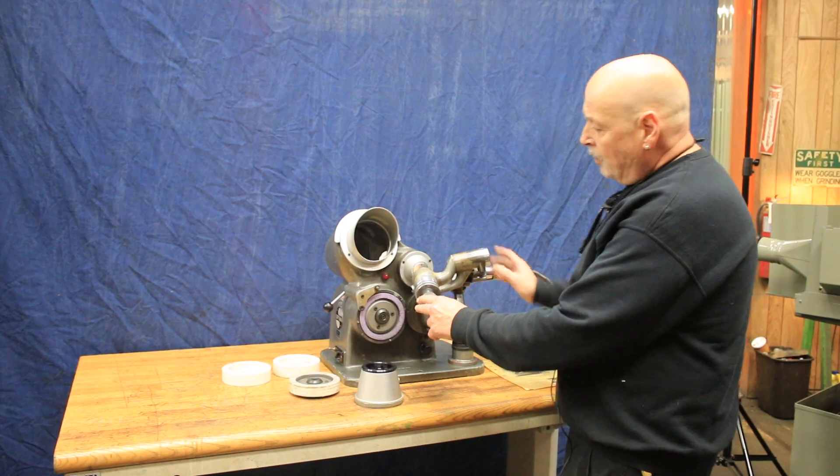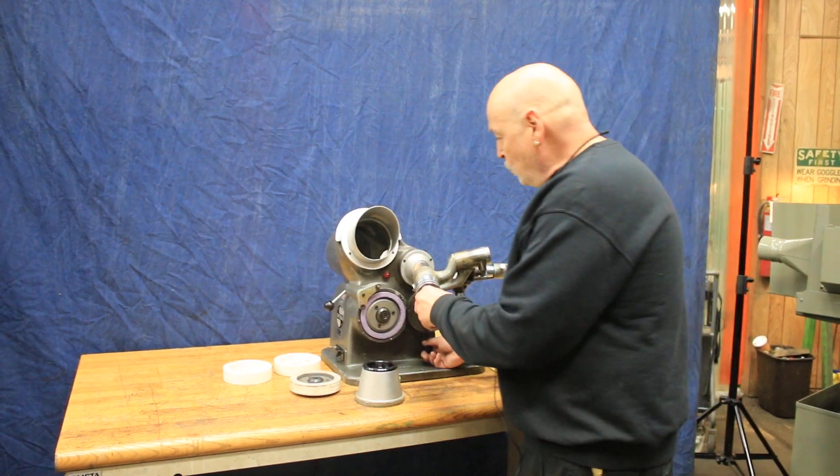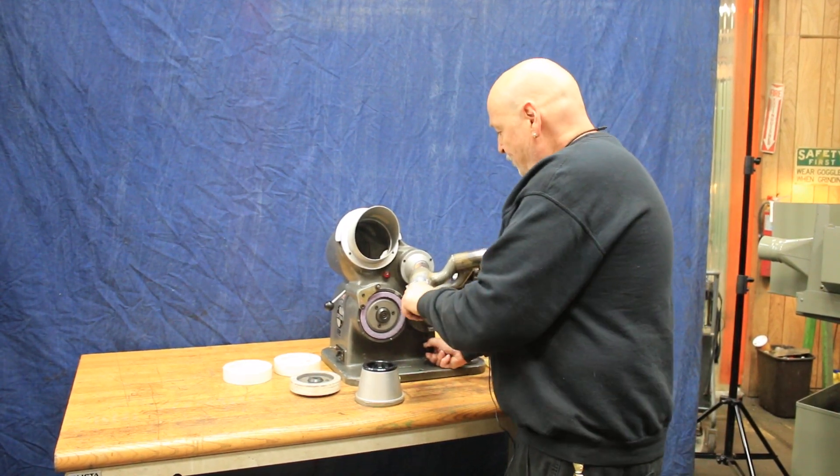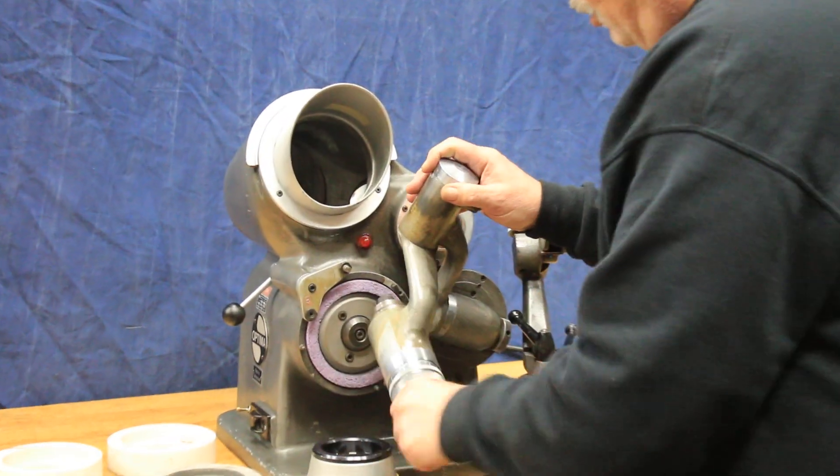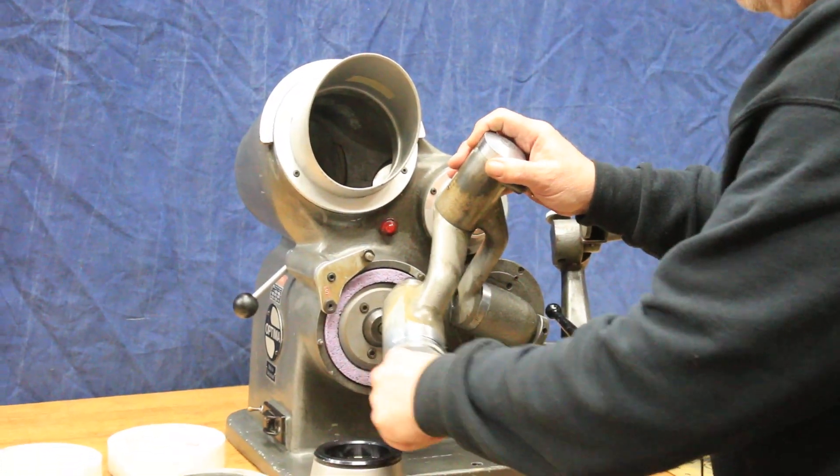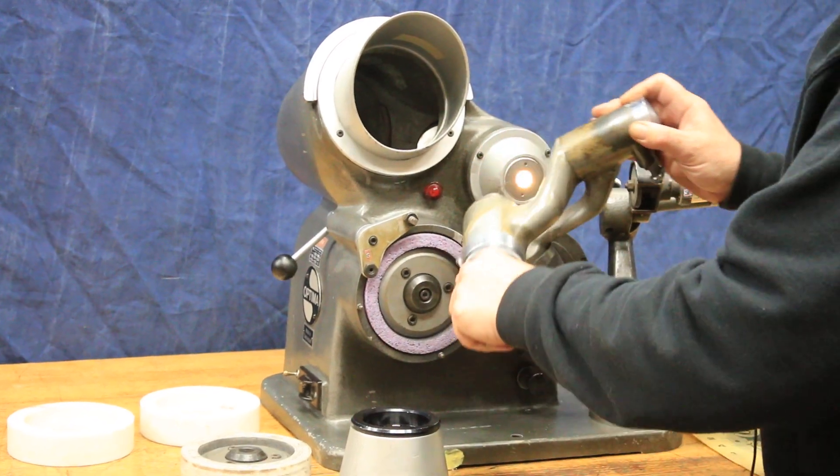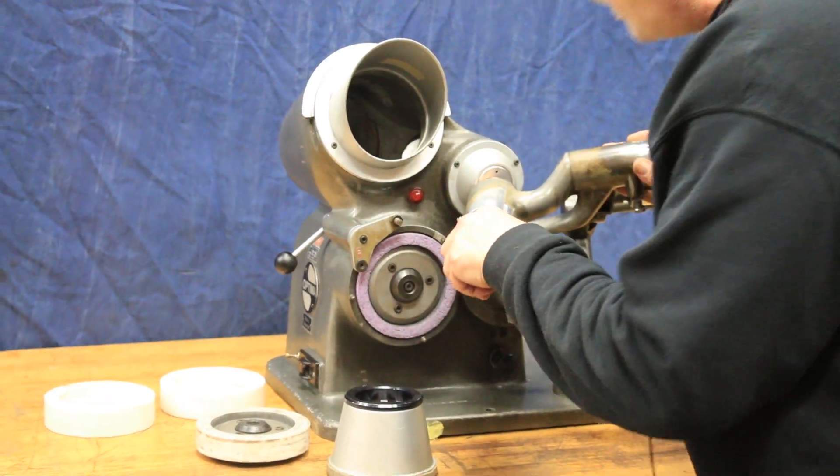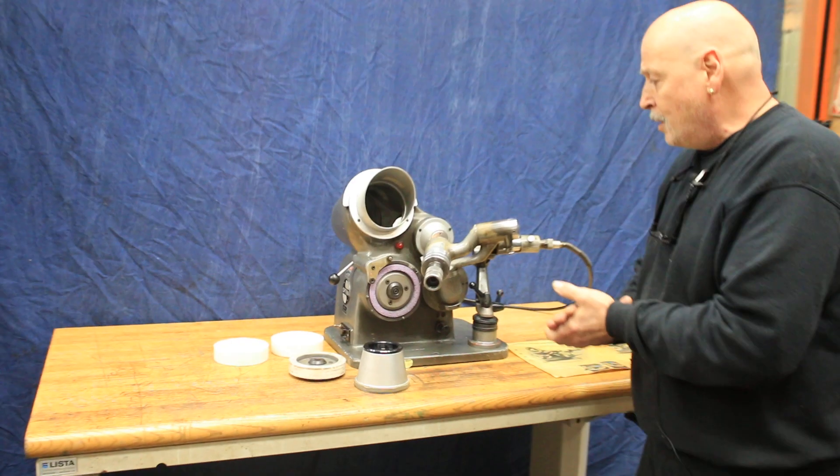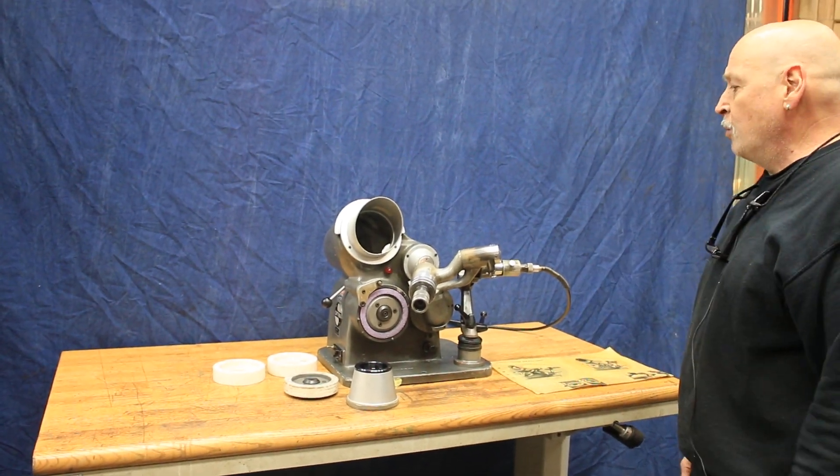Same with the arm here. The idea here is to swing this around and actually grind your drill, the two sides, and then come back here and look at it in the microscope or in the optical portion of the machine.